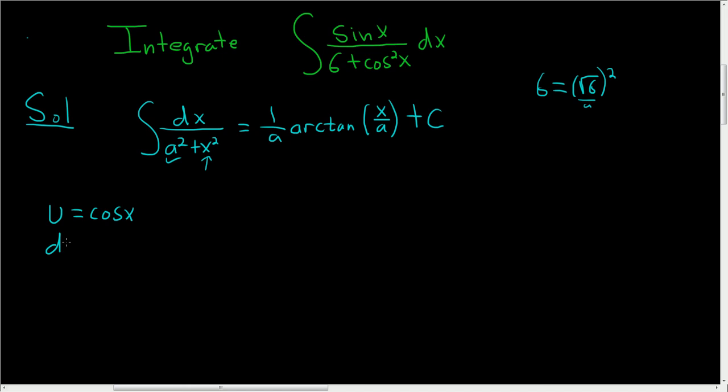And then so du, well, the derivative of cosine is negative sine, so negative sine x dx. And we don't have a negative sine in our integrand, so we'll multiply or divide by negative 1. So negative du is equal to sine x dx.